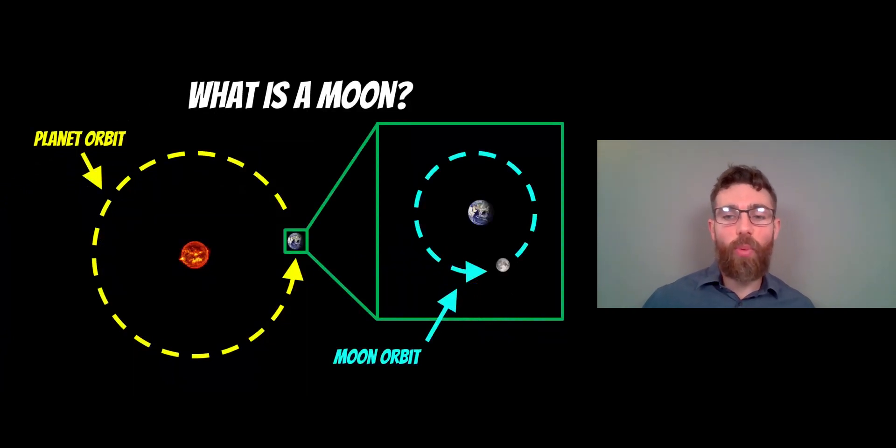So probably worth noting what a moon actually is at this point. A moon is an object that is orbiting a planet, and that planet is then orbiting a star. Now you can get smaller objects that are the same size as a moon orbiting the Sun or a star, but it wouldn't be a planet, it would be an asteroid or a minor planet. So a moon has to orbit a planet.